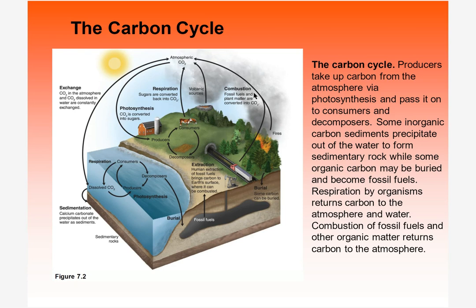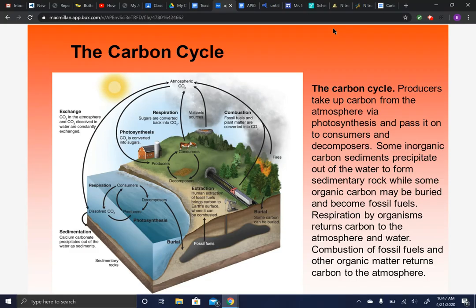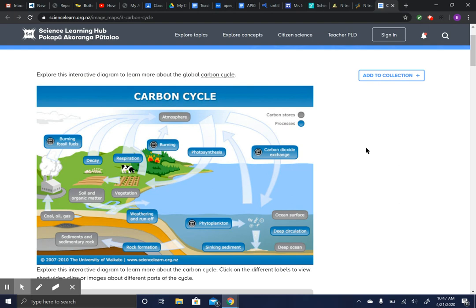Carbon used in photosynthesis is returned to the soil; decomposers release carbon about as fast as it is added. The slow addition of carbon to fossil fuels is about as slow as the rate at which fossil fuels release it naturally. But when we chop down trees, clear-cut, and extract fossil fuels, we're disrupting that balance.